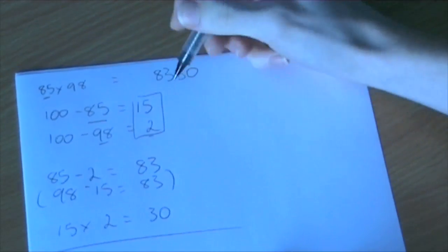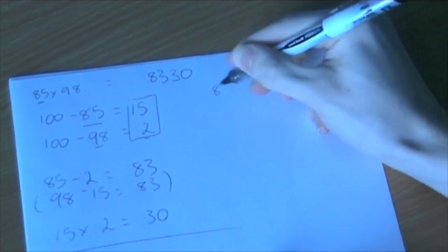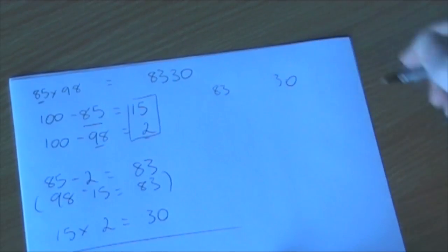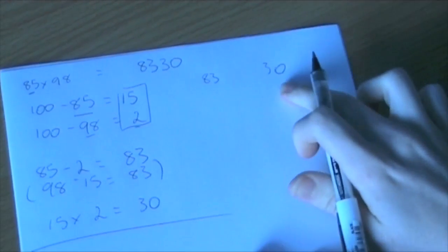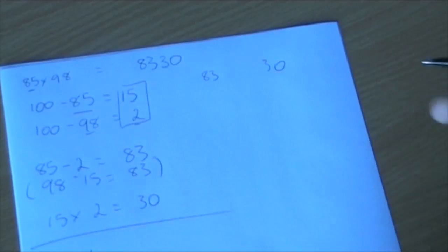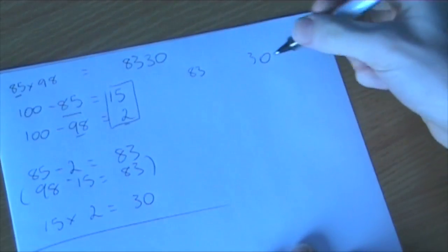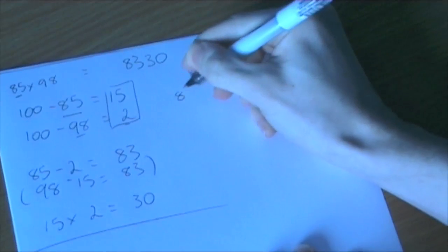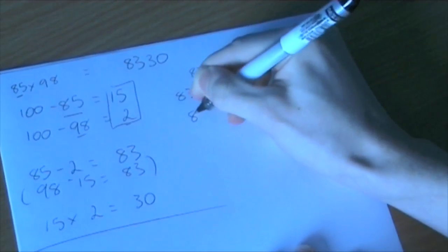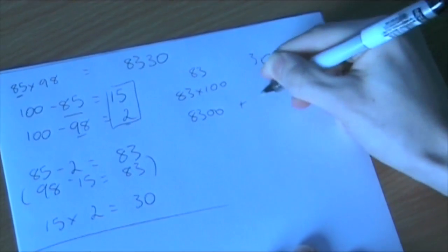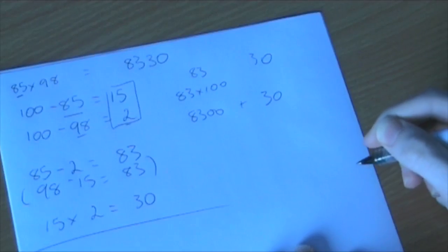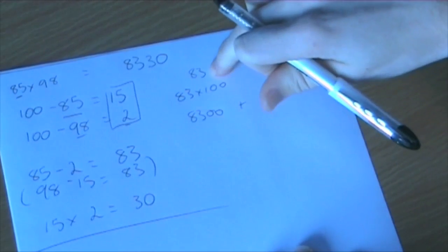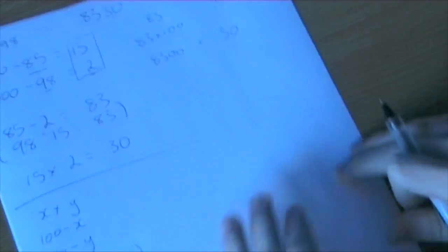So if we just take a look at the two numbers we got, we got 83 and 30. Now we didn't just add those numbers together. We wrote one, then we wrote the other. So the actual relationship between the two numbers is, we actually multiplied this by 100. So we got 83 times 100 to get 8,300. And then we added 30. So we multiply the 83 by 100, then add the 30.